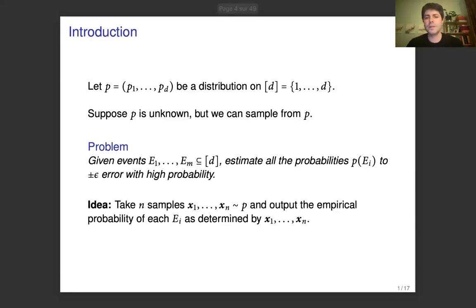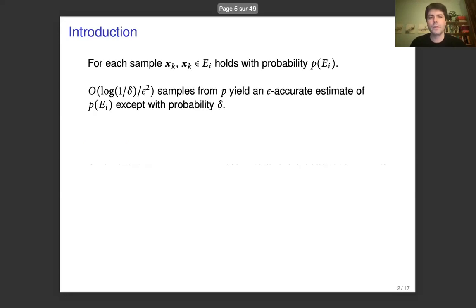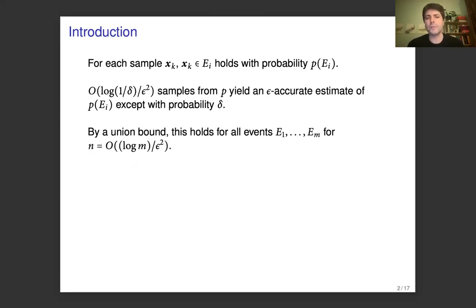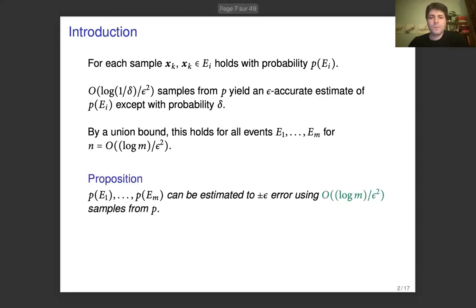To do this, we can just take n samples from p and output the empirical probability of each event as determined by these samples. We know that if we apply a concentration inequality, we can show that log(1/delta) over epsilon squared samples from p will yield an epsilon-accurate estimate of the probability of one event, except with probability delta. So we can apply a union bound to get epsilon-accurate estimates for all events, solving this problem with log(m) over epsilon squared samples from p.